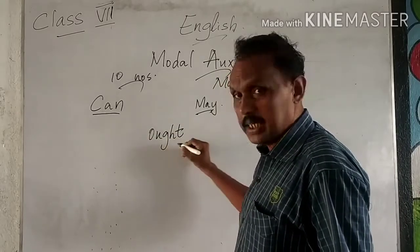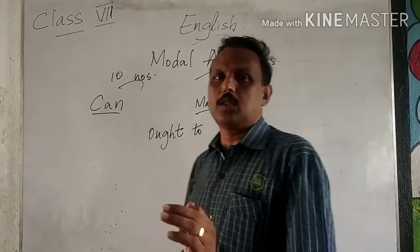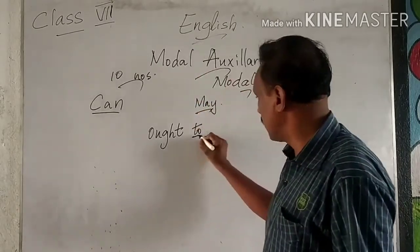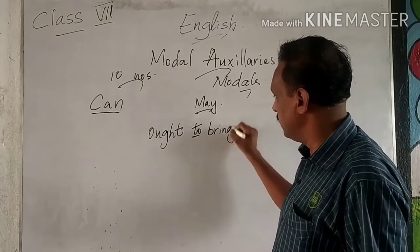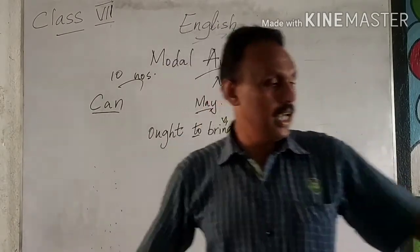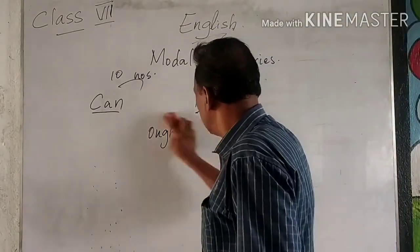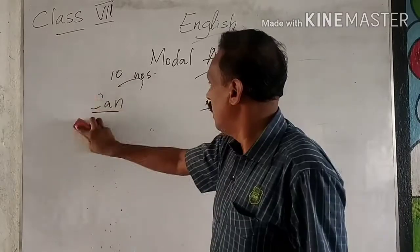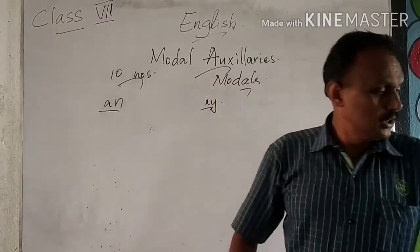Whenever you write 'ought,' you cannot write it alone — you must add 'to.' For example: 'He ought to bring the book.' When 'to' comes, the verb that follows changes to the base form (infinitive). I'll be explaining more about that in another class. So now — can and may: when do we use them?